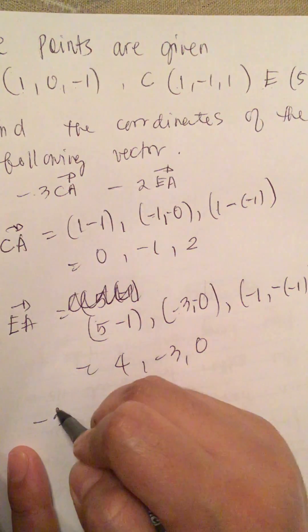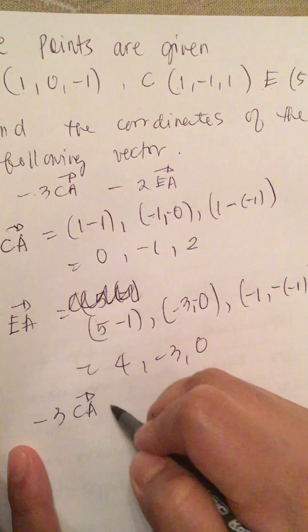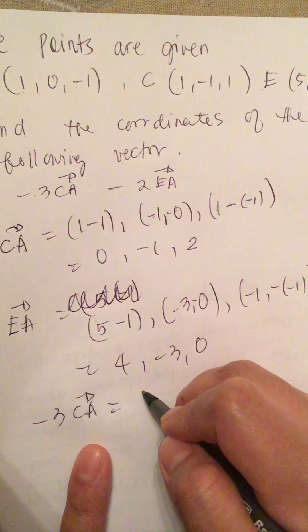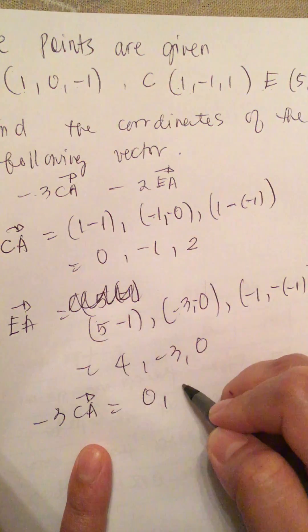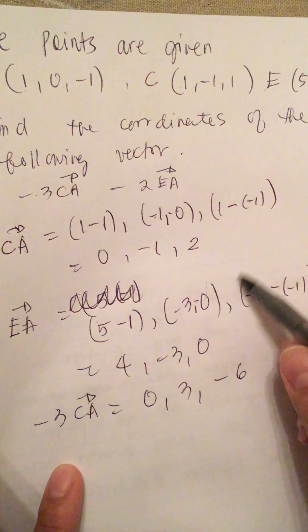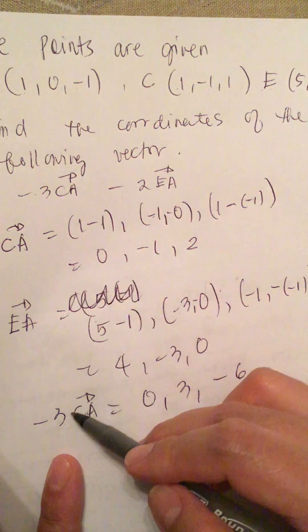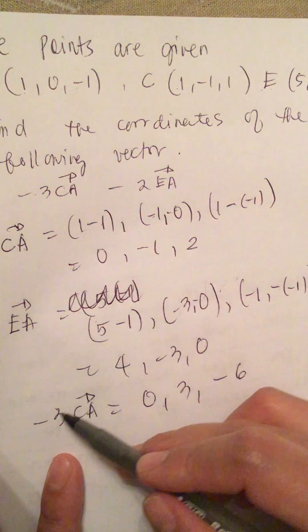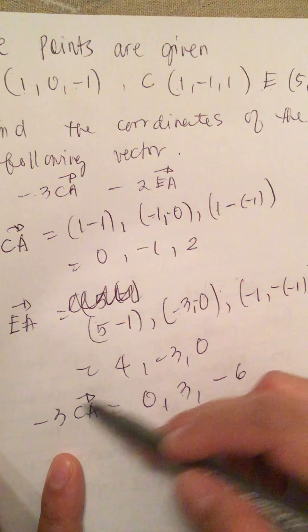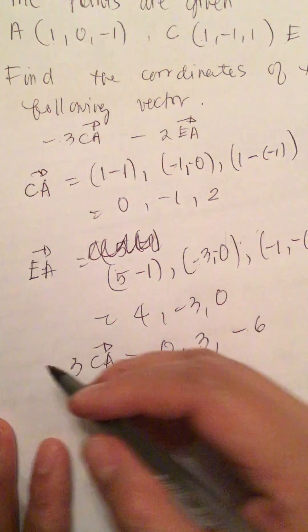So minus 3 times vector CA is equal to minus 3 times (0, -1, 2): 0 times 3 is 0, minus 1 times 3 is positive 3, and 2 times 3 is negative 6. So minus 3 CA equals (0, 3, -6).